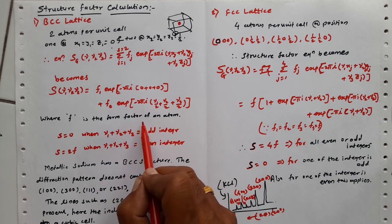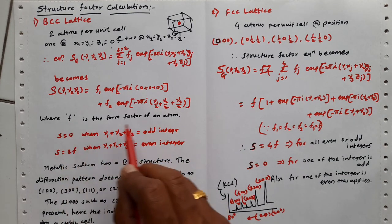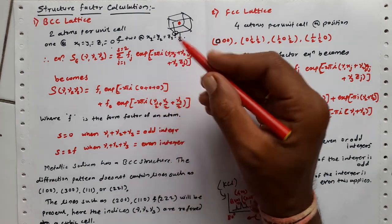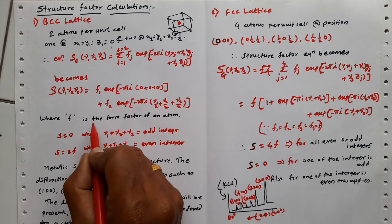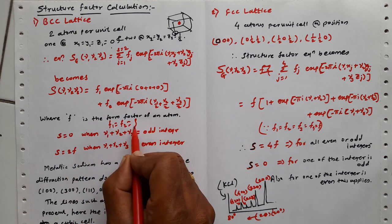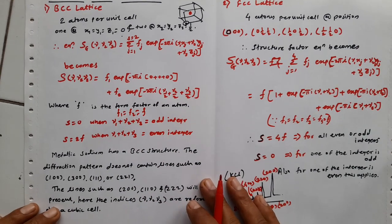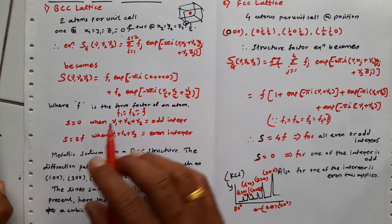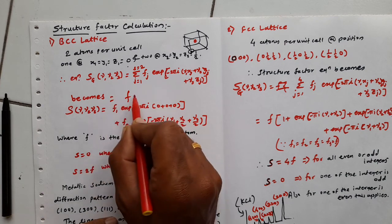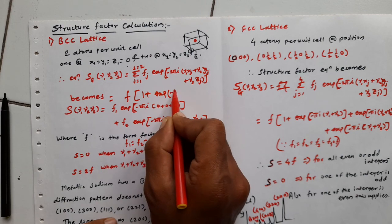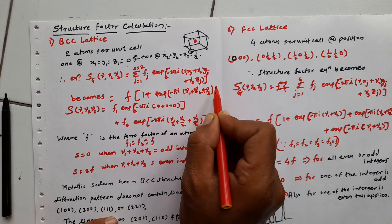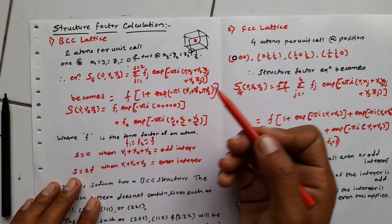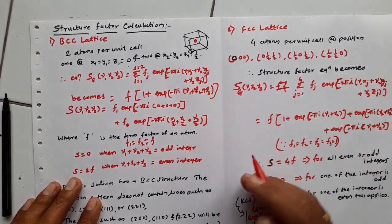The form factor F of the atom — we will look at what the atomic form factor is in the next lecture. If the atoms are of the same kind, the amplitude of reflection remains the same, so F1 equals F2 equals F. We can rewrite the structure factor equation as S equals F times (1 plus exponential of minus pi i times (nu1 + nu2 + nu3)). The values of nu1, nu2, nu3 decide whether the structure factor has some value or vanishes to zero.